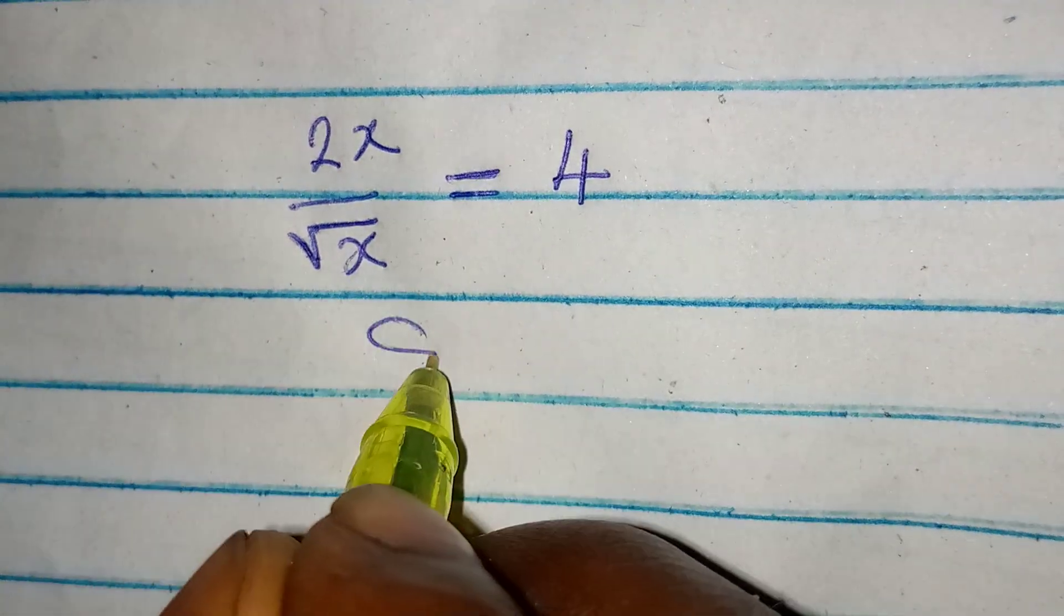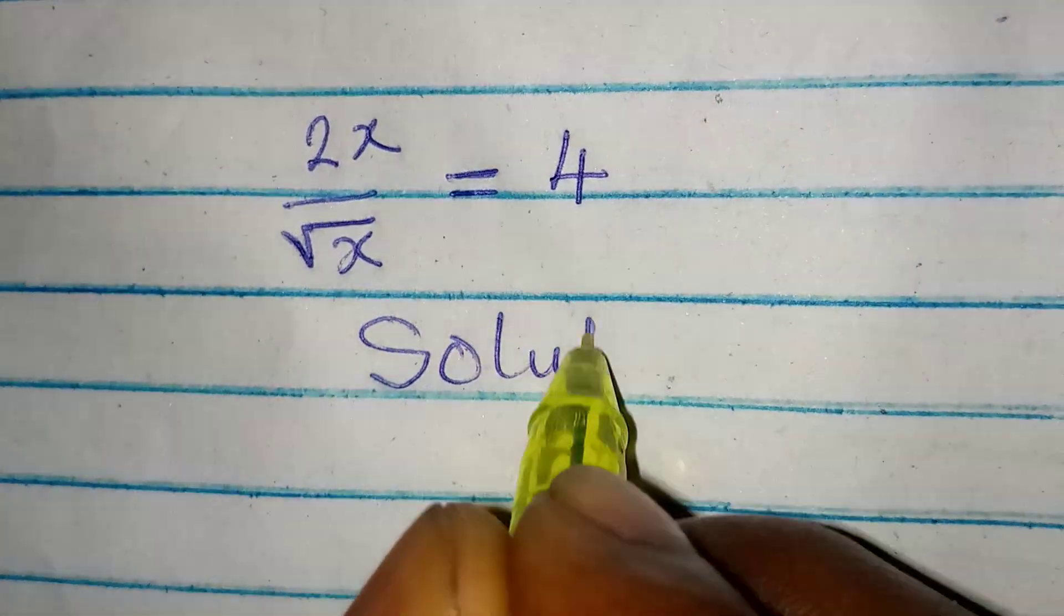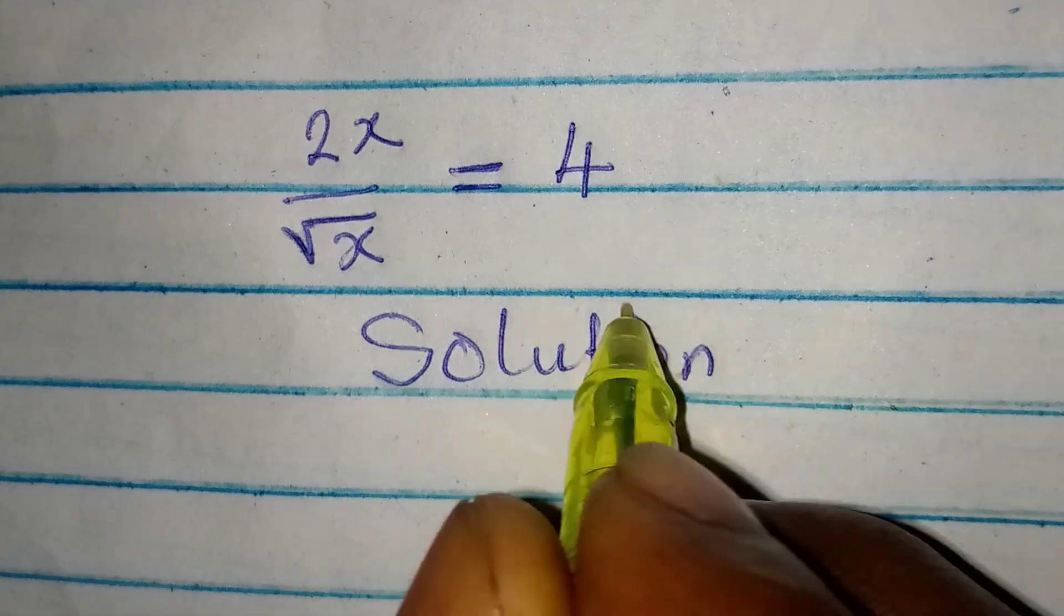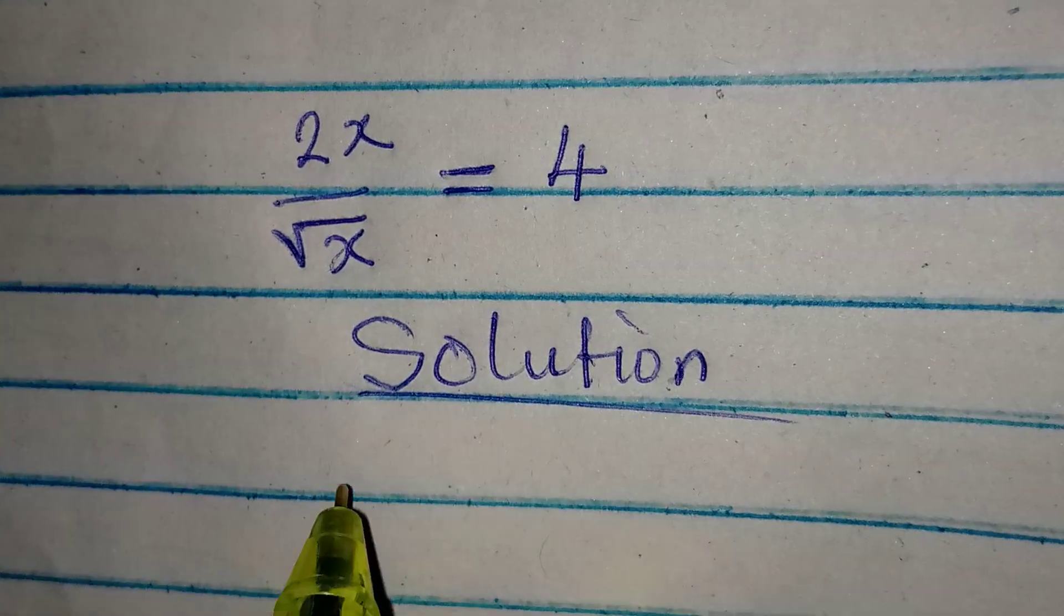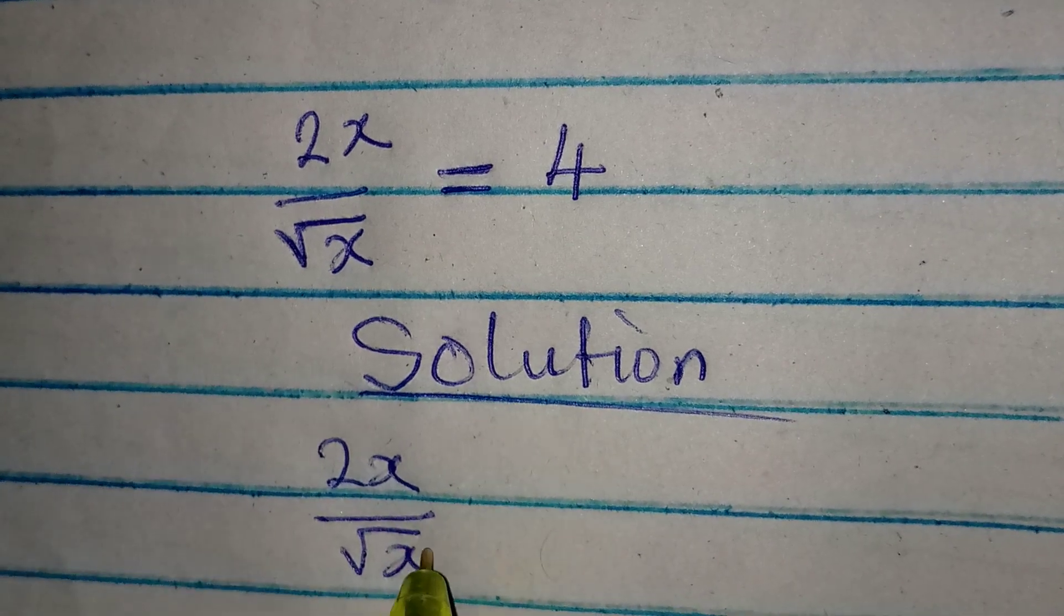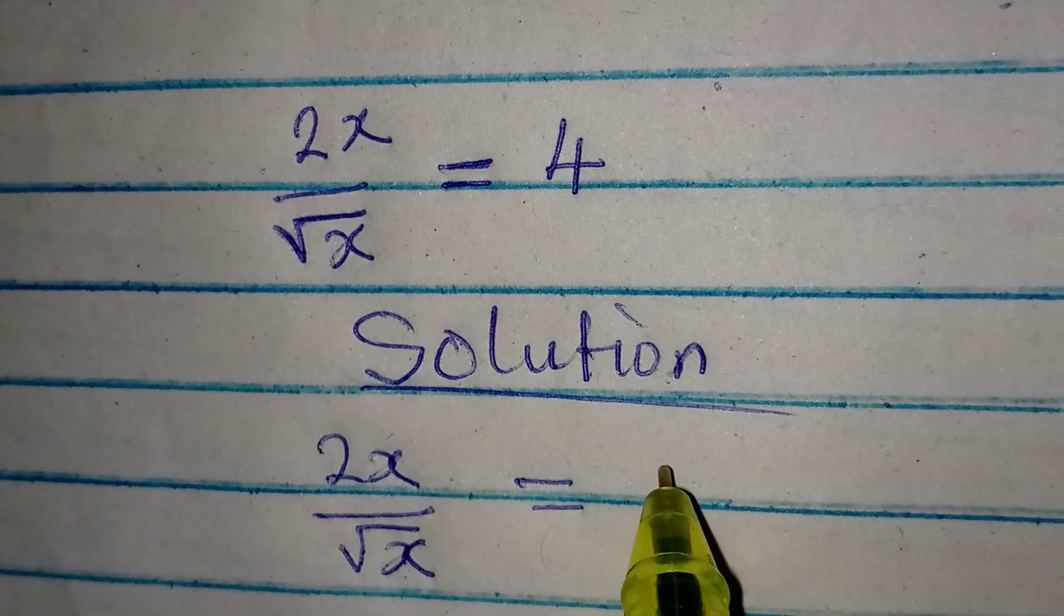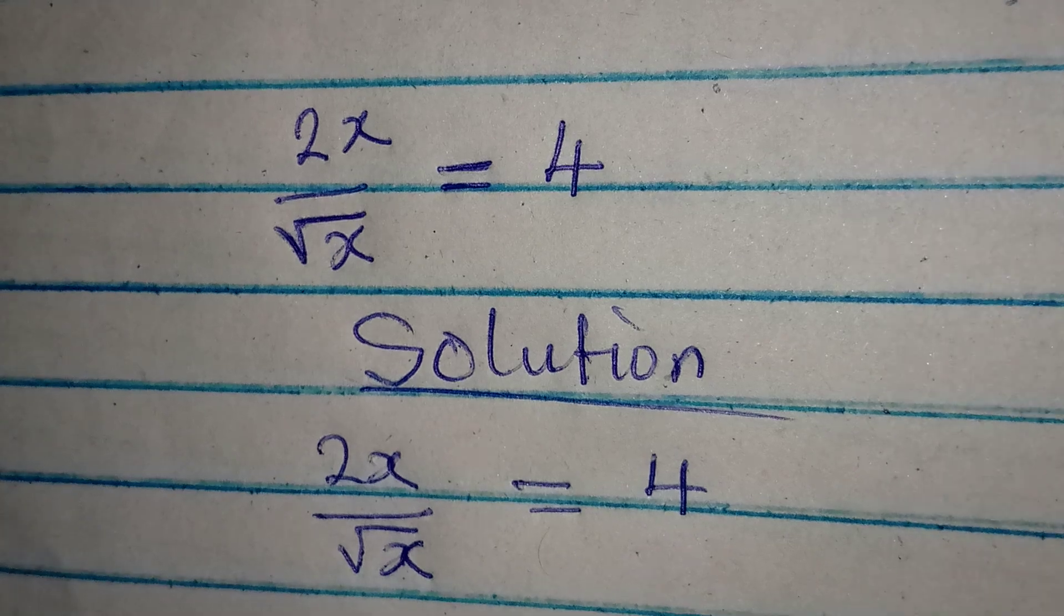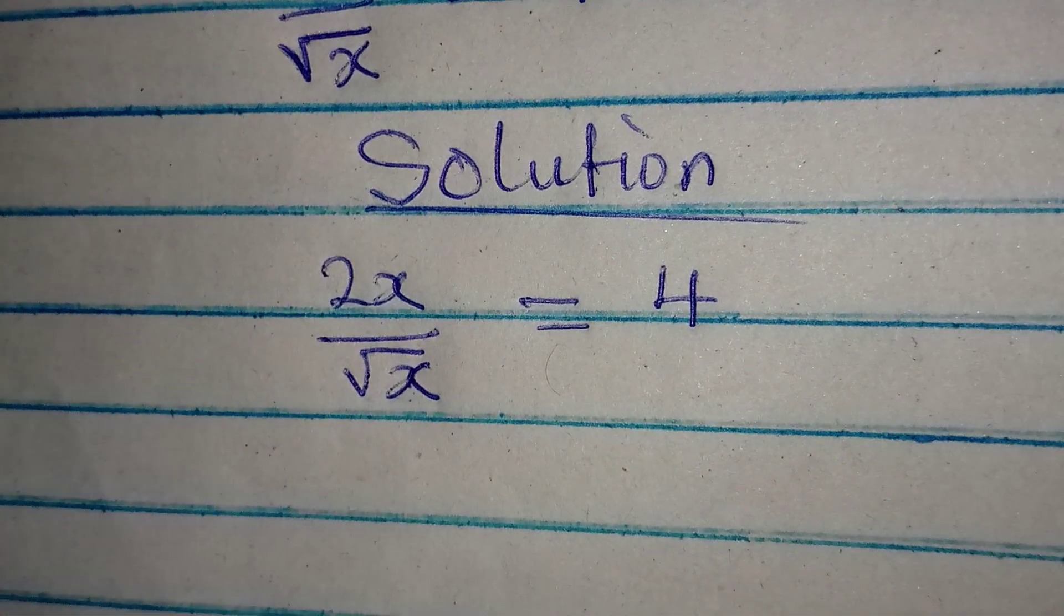Hello everyone, let's provide a solution to this problem: 2x over square root of x equals 4. We can cross multiply.